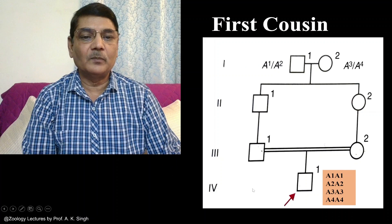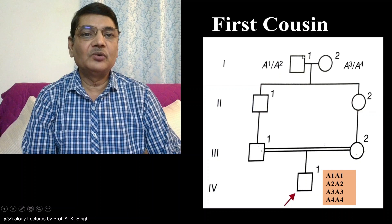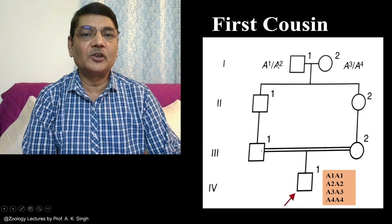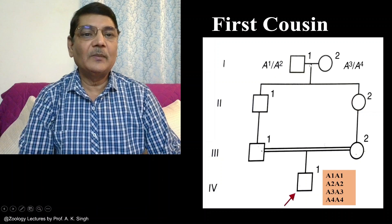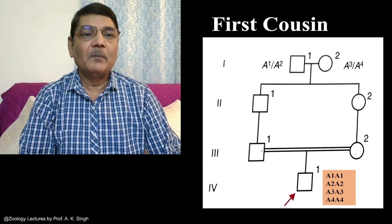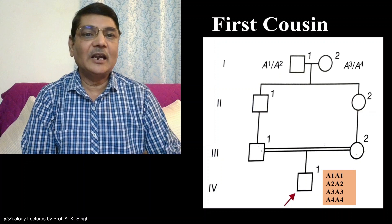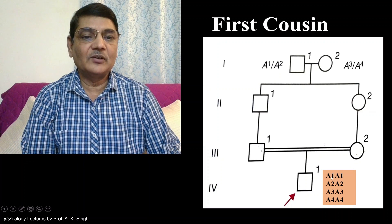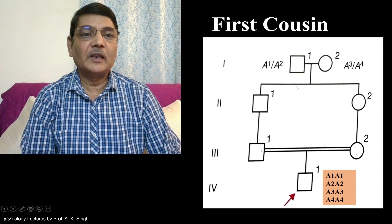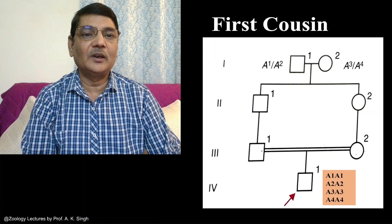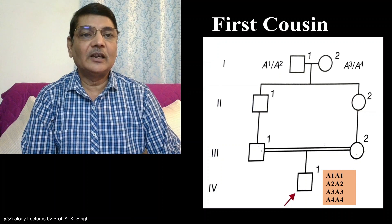In this particular pedigree, four generations are shown. In the first generation, these two individuals, male and female, their genotype is shown. Genotype of this male person is A1, A2 on a specific gene locus, and exactly on the same locus the alleles are A3, A4 in this female. For calculating inbreeding coefficient, we have to consider maximum genetic difference between the parents, so a single gene locus is being represented by four alleles: A1, A2, A3, A4.